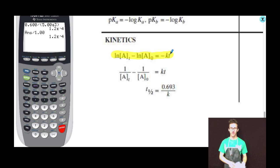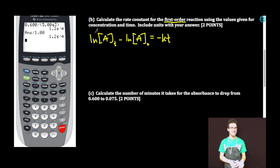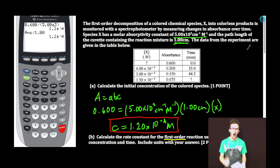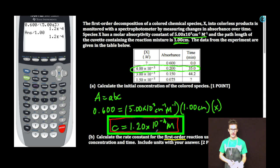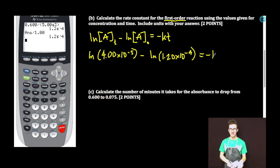Integrated rate law for first order reaction. Natural log of concentration at time t minus natural log of initial concentration equals negative kt. Remember, it's a rate constant, so you can use any of the concentration and time values. I'm going to use these right here. Time, 35 minutes. Concentration, 4.00 times 10 to the minus 5. Natural log, 4.00 times 10 to the minus 5, minus natural log of our initial concentration. Equal to negative k, which is what we're solving for. That was after 35 minutes.